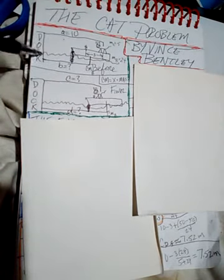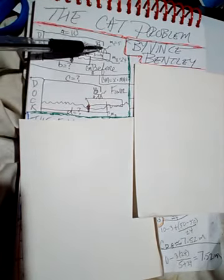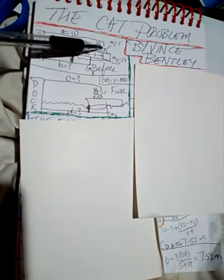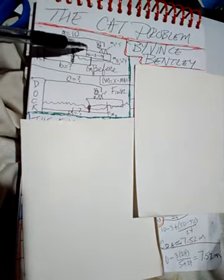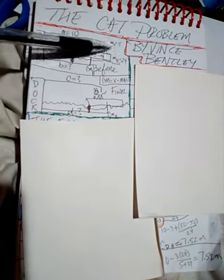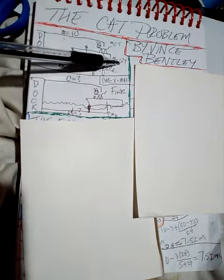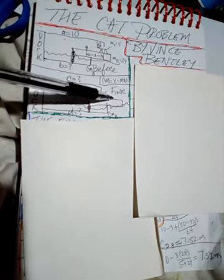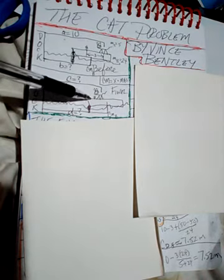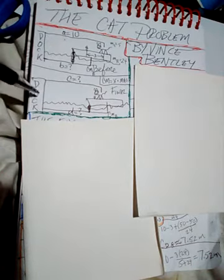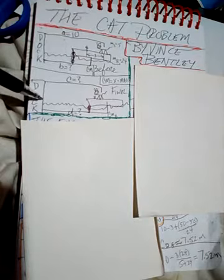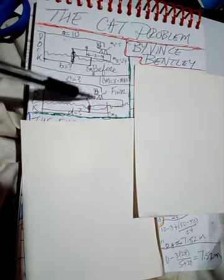Here's the dock, and it is 10 meters from the cat on the boat at the beginning of the experiment. The cat is three meters from the mouse, the cat has a mass of five kilograms, and the boat has a mass of 24 kilograms. This is the situation before and after the cat walks three meters on the boat to play with the mouse. We'd like to know how far the cat is from the dock.